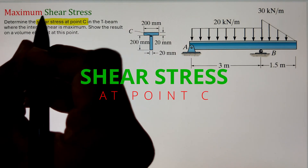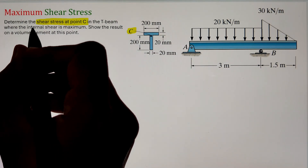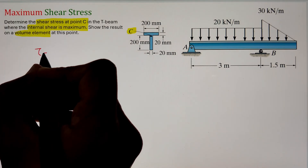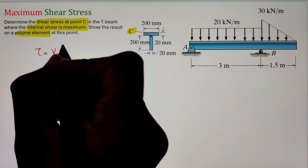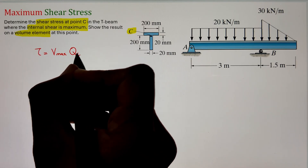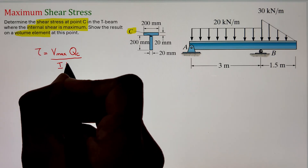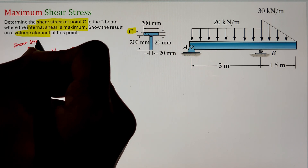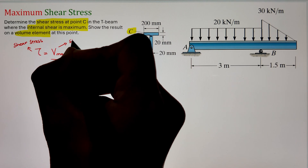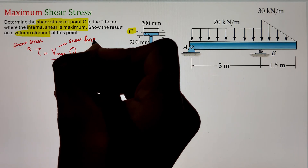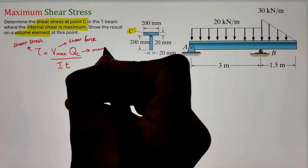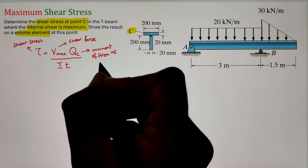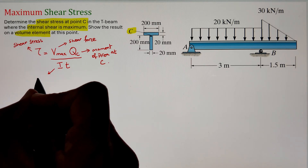To find the shear stress at point C on a T-beam cross-section of an overhanging beam under rectangular and triangular distributed loading, at a location where the internal shear force is maximum, and to represent the results on a volume element, we start by writing the shear stress formula: τ = V_max · Q_C / (I · t), where τ is the shear stress, V_max is the maximum shear force, Q_C is the first moment of area at point C, I is the moment of inertia, and t is the thickness at that point.